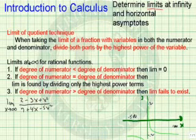I'm going to determine the limits at infinity and also find the horizontal asymptotes. There's a trick that we have, a technique called limit of quotient technique. When taking the limit of a fraction with variables in both the numerator and denominator, we can divide both parts by the highest power of the variable.